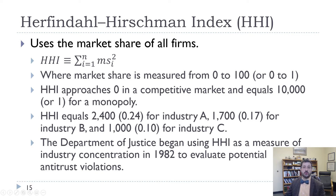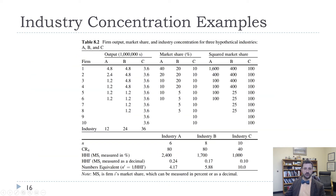The HHI is actually used by the Department of Justice, starting in 1982, to evaluate antitrust violations and to think about whether mergers between large firms should be allowed. The HHI can be measured between zero and one, or between zero and 10,000 — they're telling you the same information; it just depends on whether we're dealing with percentage points or decimal points.